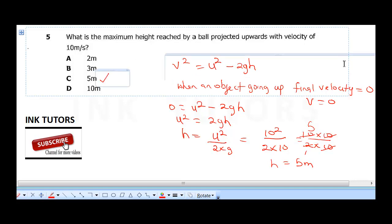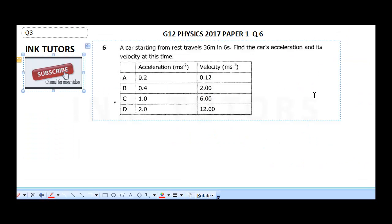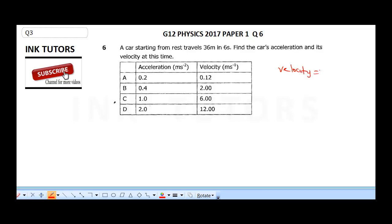The next question says: a car starting from rest travels 36 meters in 6 seconds. Find the car's acceleration and its velocity at this time. To get the acceleration, first you need to get the velocity.